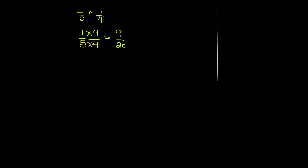Let's do another problem. Problem number two: we have nine over two, then a line, and then five over four. This line also represents division. To make this easy, you can also write it as nine over two divided by five over four.